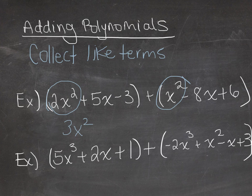Next I have 5x and a negative 8x. Remember the sign that's in front of the term kind of goes with it. So I have 5x minus 8x will be negative 3x.